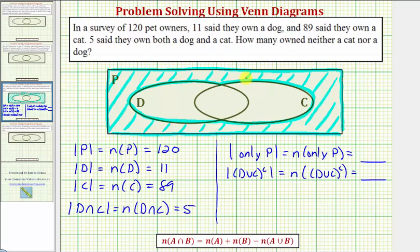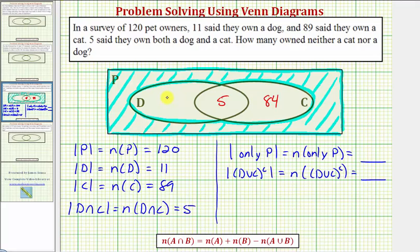Now let's record the number of elements in each set, starting with the intersection of D and C. The number of elements in D intersect C equals five, so there are five elements in the overlapping region of D and C. The number of elements in set C is eighty-nine, but five of those are in the intersection, so eighty-nine minus five equals eighty-four elements only in C. Set D contains eleven elements, five of which are in the intersection, so eleven minus five equals six elements only in D.